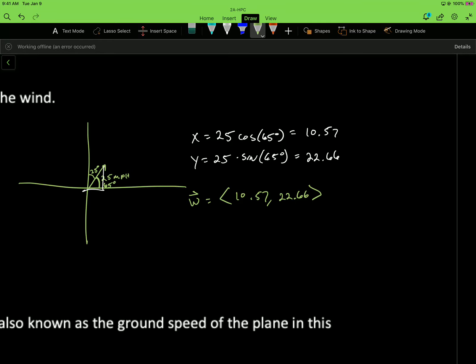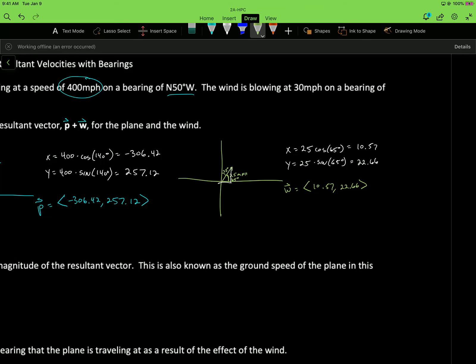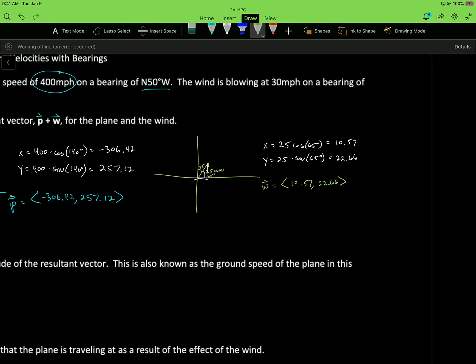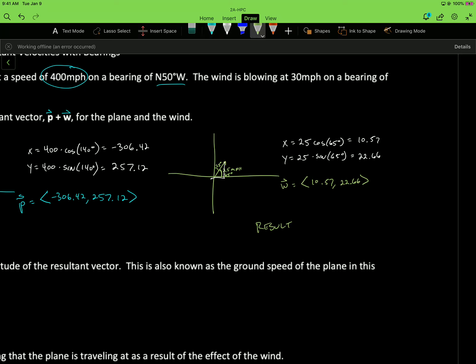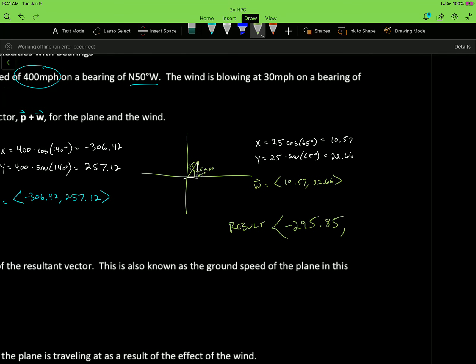So this vector is going to be 10.57 and 22.66. That's our wind vector. So we want the resultant vector. So that's going to be just adding, find the resultant vector. So we're going to add those two together. We're going to do P plus W. So the result will be add our X components, add our Y components. So 10.57 plus negative 306.42, we've got negative 295.85. And then the Y's are going to be 257.12 plus 22.66, which is 279.78. That's our resultant vector.